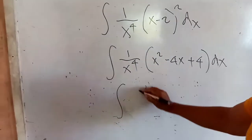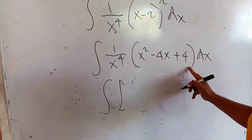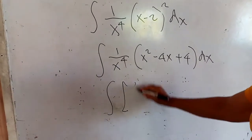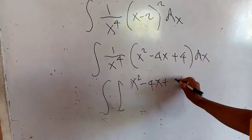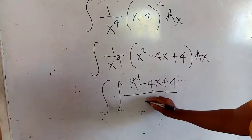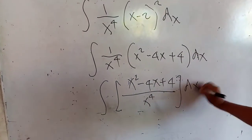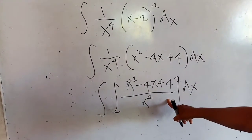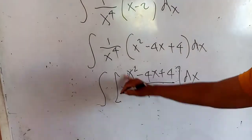This is the integral — I multiply this fraction by this trinomial — that would be x squared minus 4x plus 4, divided by your denominator x to the 4, times the differential dx. Now, you cannot use your power integration formula unless we do the distributive law.